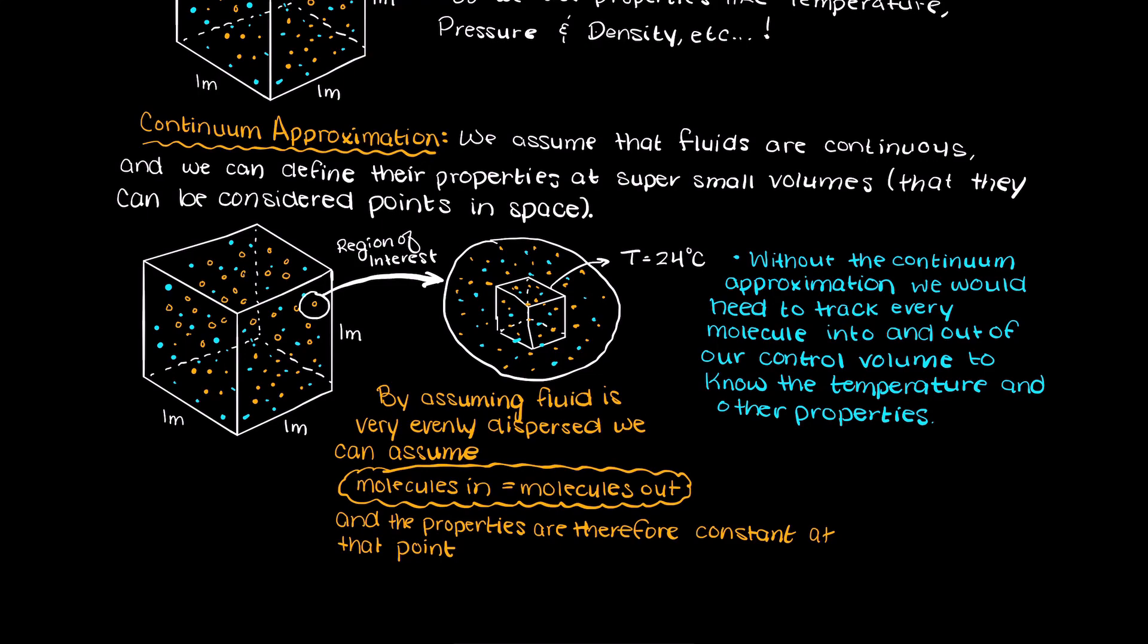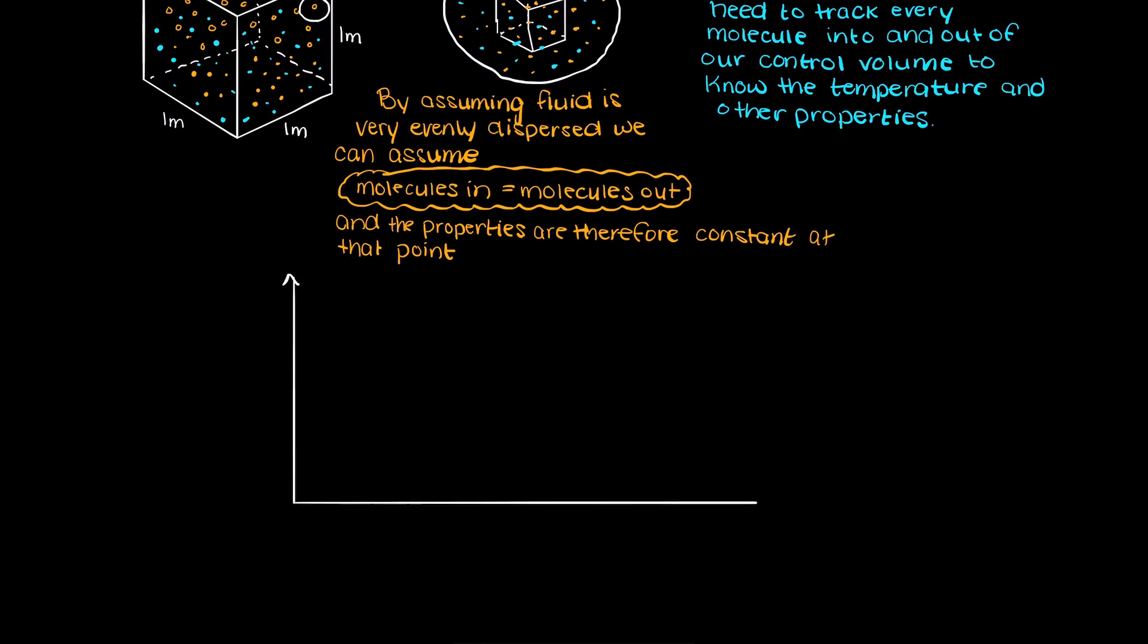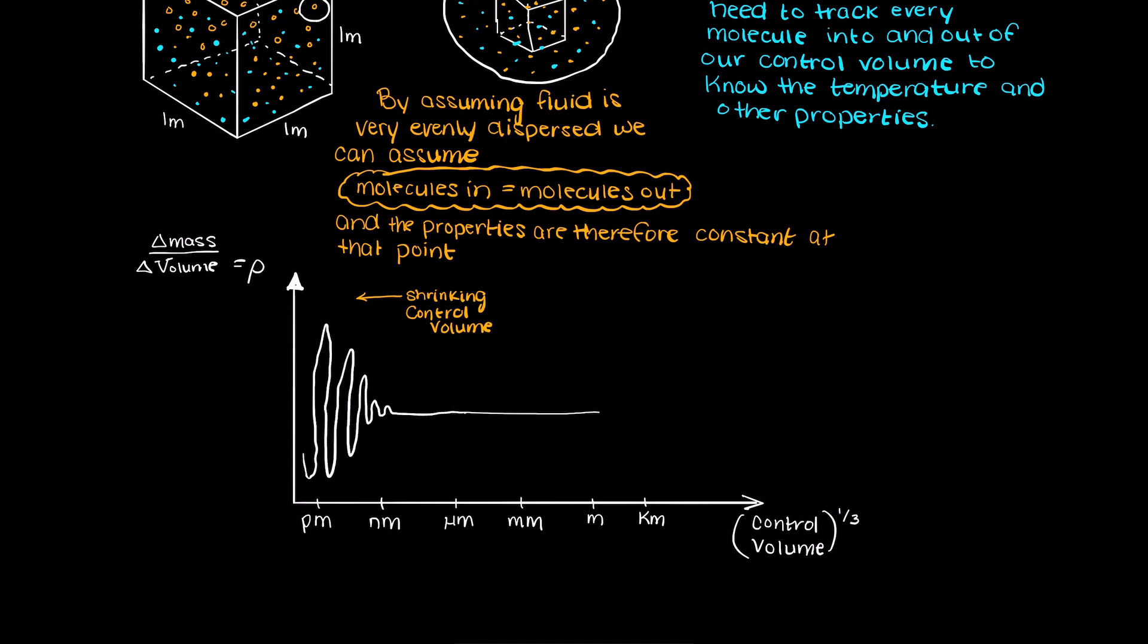However, what if we continued to shrink our control volume? As it shrinks, the amount of molecules within our box will fluctuate more frequently as the space between molecules becomes more relevant. As we approach what's called the molecular domain, we get this modulation in our graph. In the molecular domain, the continuum approximation is not valid.